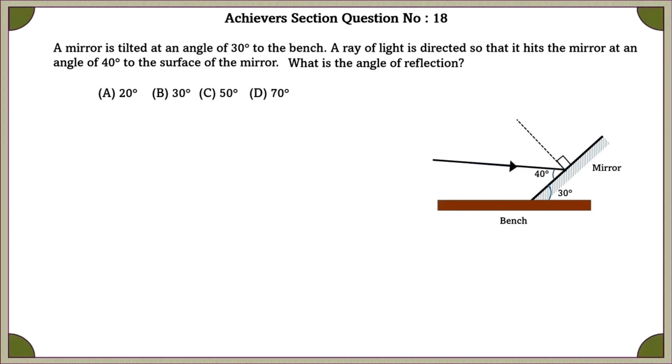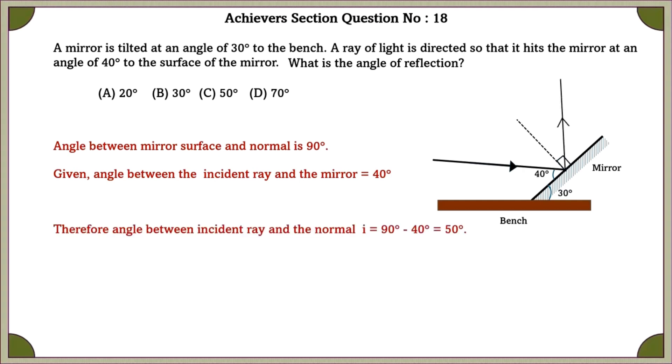Achievers section question number 18. A mirror is tilted at an angle of 30 degrees to the bench. A ray of light is directed so that it hits the mirror at an angle of 40 degrees to the surface of the mirror. What is the angle of reflection? Angle between mirror surface and normal is 90 degrees. Given, angle between the incident ray and the mirror is 40 degrees. Therefore, angle between the incident ray and the normal ray is equal to 50 degrees. By the law of reflection, angle of reflection R which is equal to I which is equal to 50 degrees.